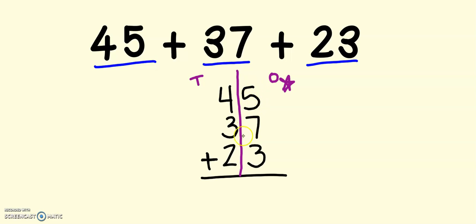Now, first I need to add up all of my ones. You might use a different strategy. What I like to do is I like to start with the biggest number and then count on the other numbers. So I do something like this. 7, 8, 9, 10, 11, 12, 13, 14, 15.